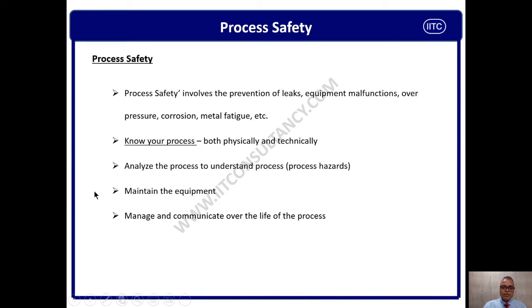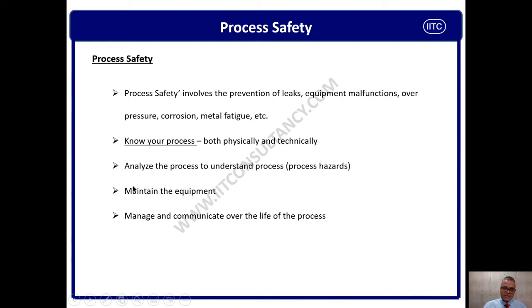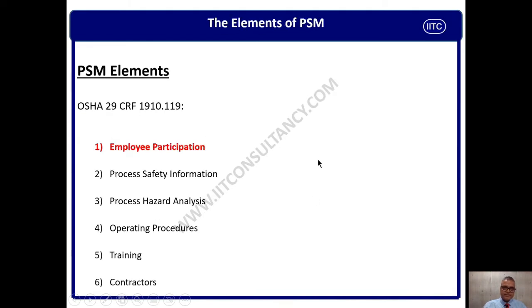We will analyze the process hazard — this is PHA, process hazard analysis, one of the elements of process safety. Please search on IITC PHA and you will find very good information regarding PHA. We also have to deal with maintenance because maintenance is reliability, availability and maintainability. We manage and communicate what are the life processes and see the complete lifecycle of process safety in this management system. Now we are going to focus on element number two — process safety information.